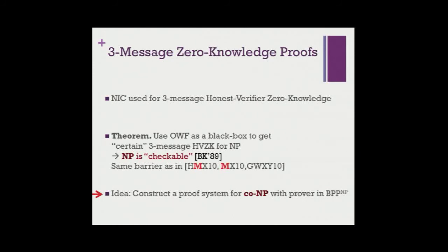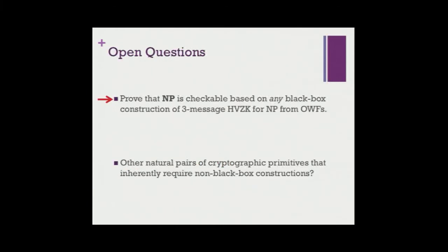The first open question is to remove the extra condition and get a program checker for any three-message honest-verifier zero-knowledge scheme. More interestingly, are there more pairs of cryptographic primitives where this phenomenon holds — where a reduction exists but the reduction cannot be black box? This is the first such pair we present. The non-black-box aspect comes from the derandomization, not from something like Cook-Levin. It would be more interesting to find this behavior in primitives defined before our work — that would be a more natural example.